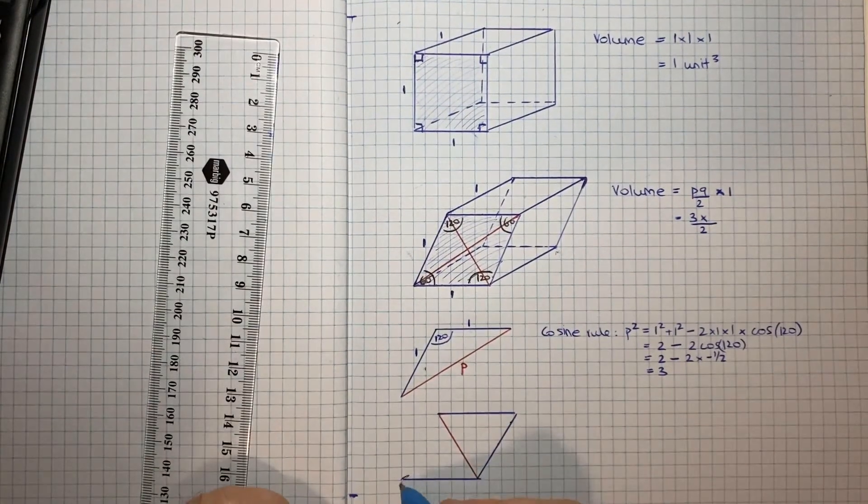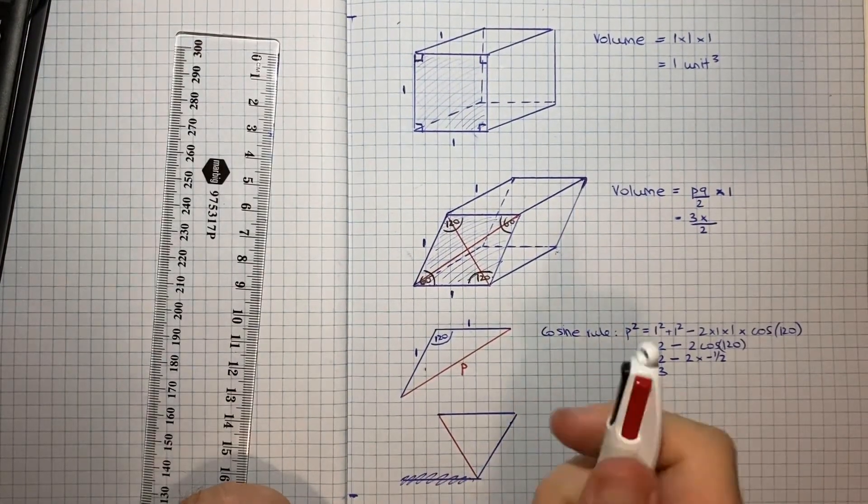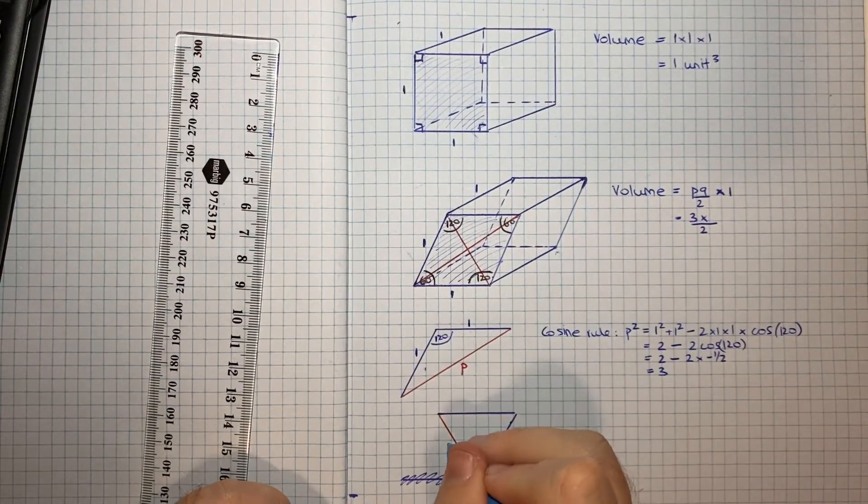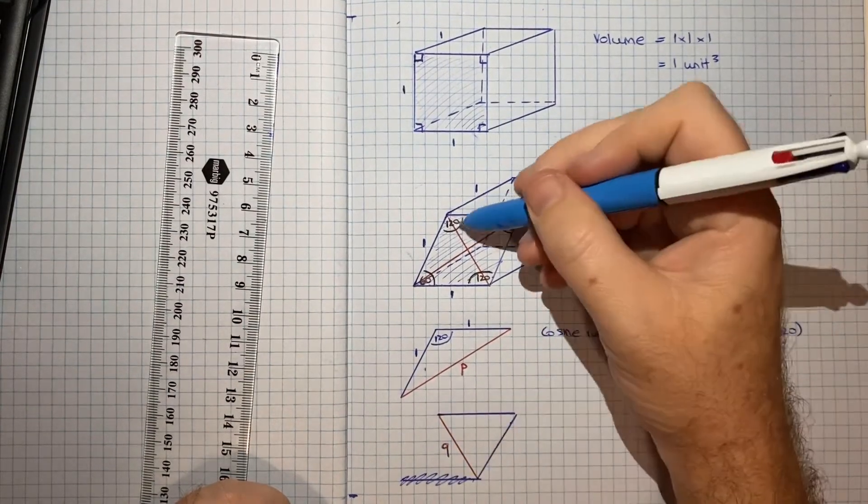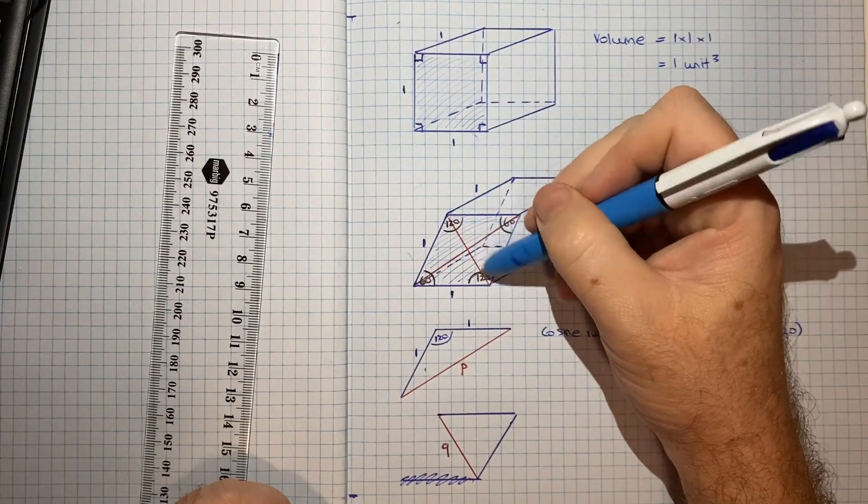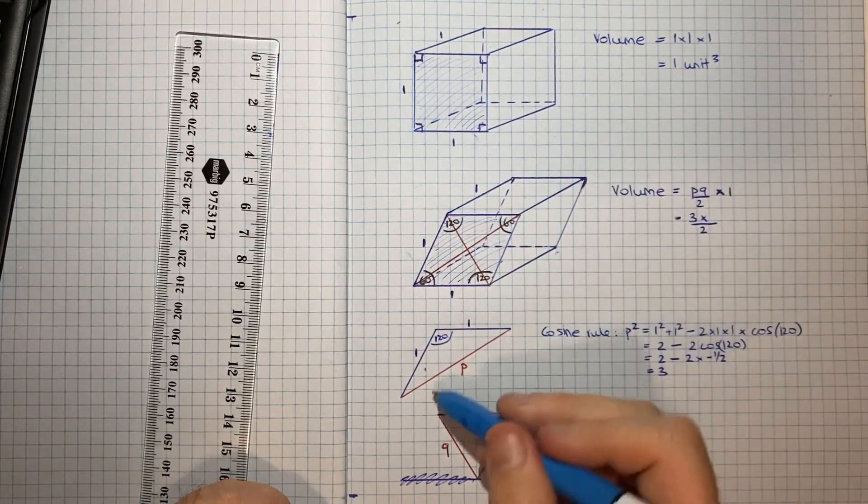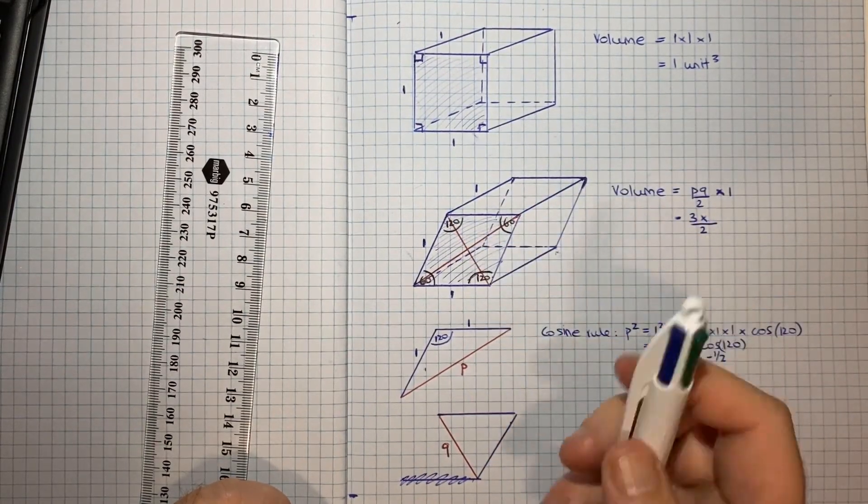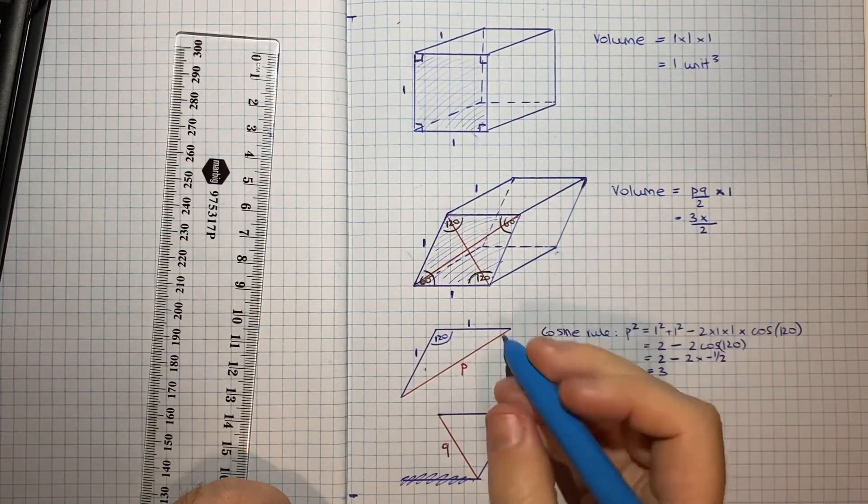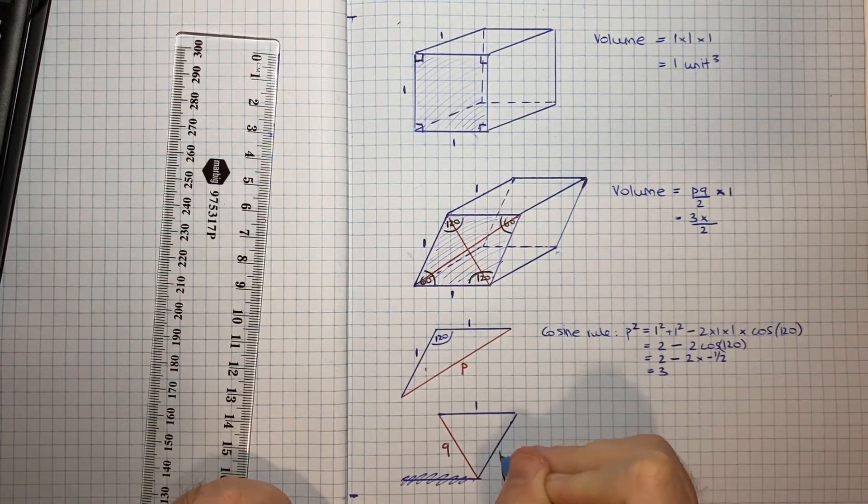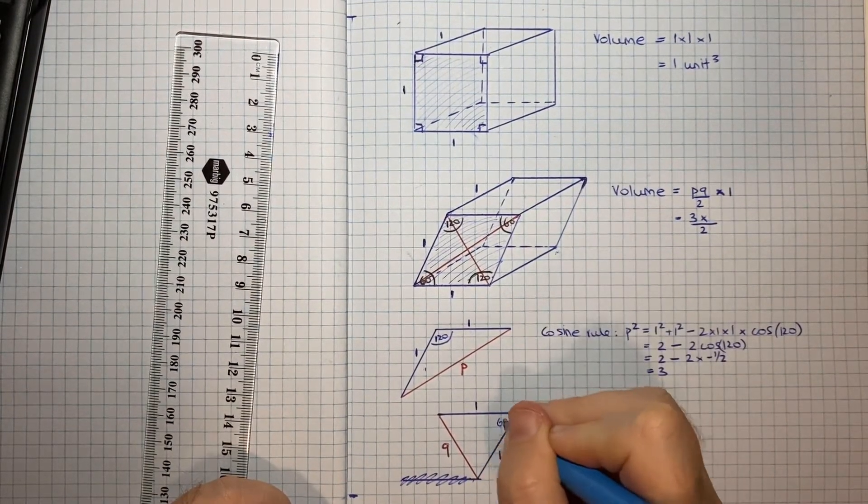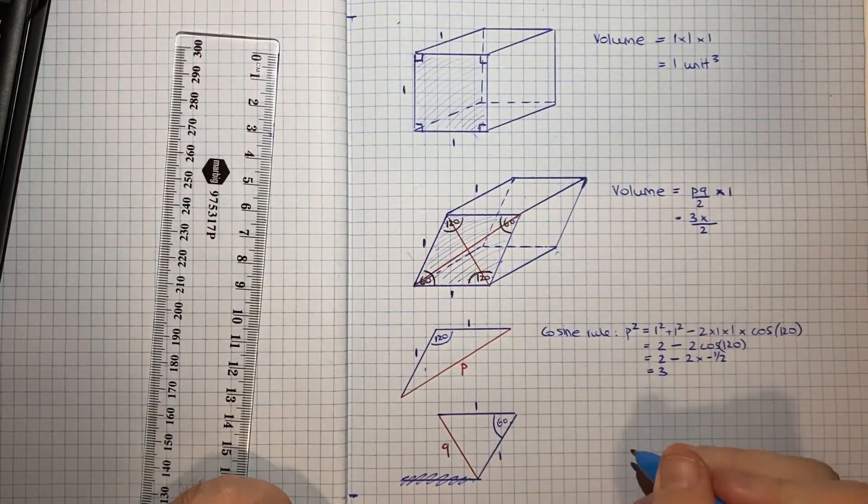So actually what we want is this triangle here to get the other diagonal. So actually we can ignore this line. And we're concerned with Q, because that'll help us get this line here, the other diagonal. So in terms of our details, our edges are all 1. This angle here is 60.